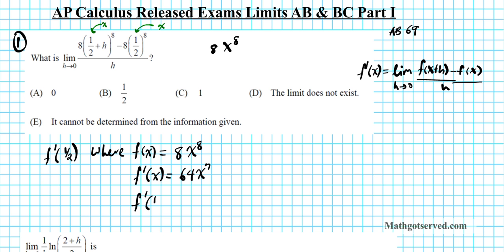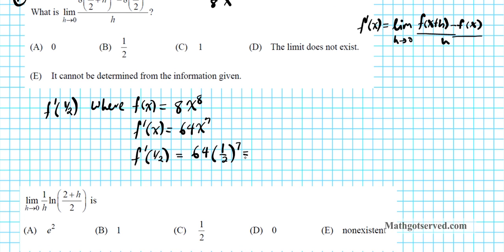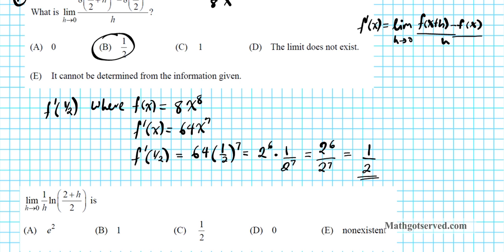Now f prime of 1/2 equals 64 times (1/2) to the 7th power. If we express 64 as a power of 2, that's 2 to the 6th power. So we have 2^6 times (1/2^7), which equals 2^6 over 2^7. Subtracting the smaller exponent from the larger gives us 1 over 2 to the 1st power, which is 1/2. We can clearly see that the answer is option letter B.